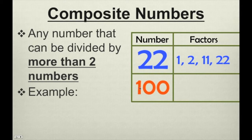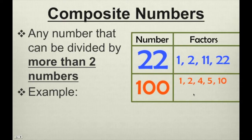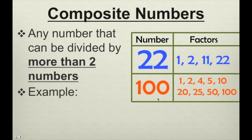And how about 100? 100 is definitely a composite number. The factors of 100 are 1, 2, 4, 5, 10, 20, 25, 50, and 100. 100 is definitely not a prime number.